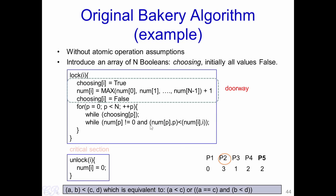The addition of the choosing Boolean array and the more complex tuple conditional check resolve the need for an atomic max operation. This is the original Bakery algorithm proposed by Leslie Lamport, which efficiently solves the critical section problem when the number of processes is greater than 2.